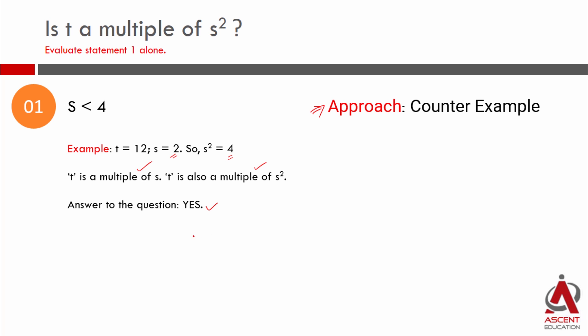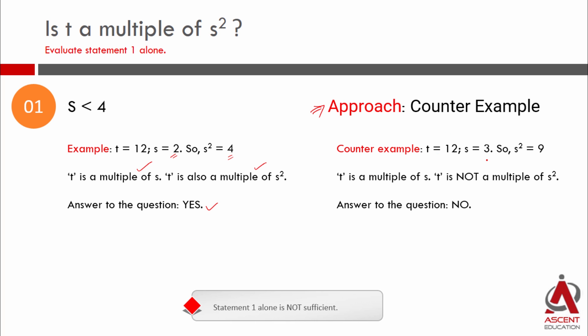Now we need to look for a counter example. Here is a counter example. t is 12. s should be less than four and it should be a prime number. Three is a prime number less than four. So s square will be 9. Is t a multiple of s? Yes, 12 is a multiple of 3. Is t a multiple of s square? 12 is not a multiple of 9. So our answer to this question is essentially a no. So if s is less than four, sometimes yes, sometimes no. So statement one alone is not sufficient.